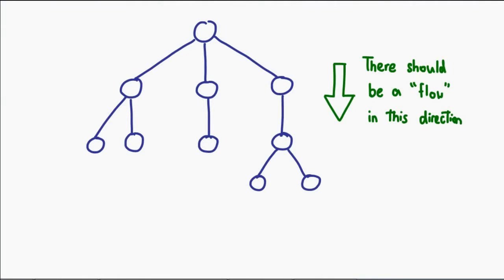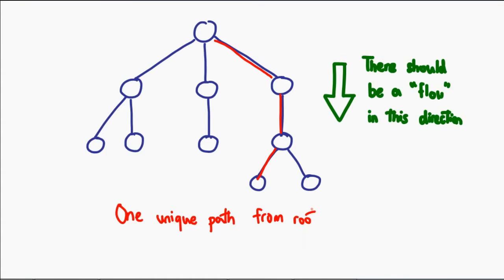What's important to note with regard to this particular data structure is that things must follow this structure. You cannot have a link going like this, or looping back like this, nothing of that sort. Things will always have a certain kind of flow, and what's important is, from the root, you should be able to have a single unique path to any node within the tree.